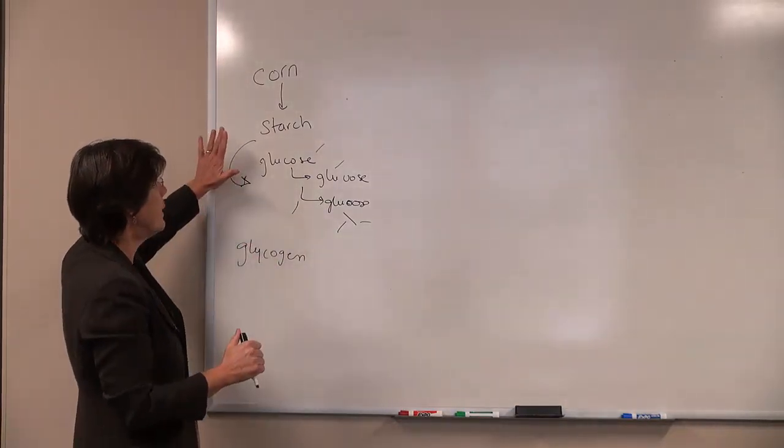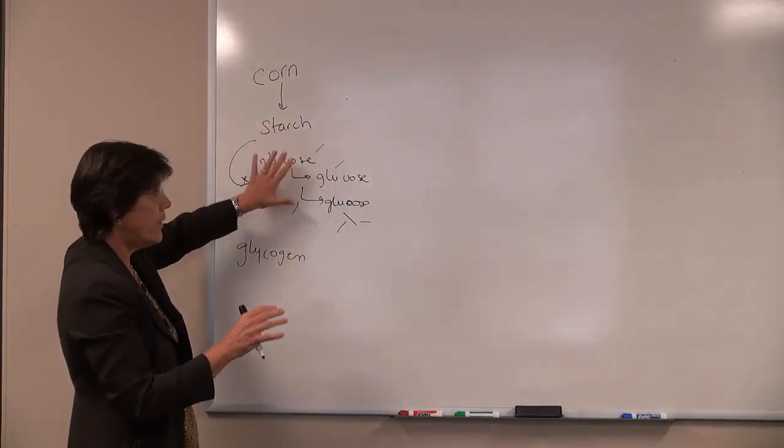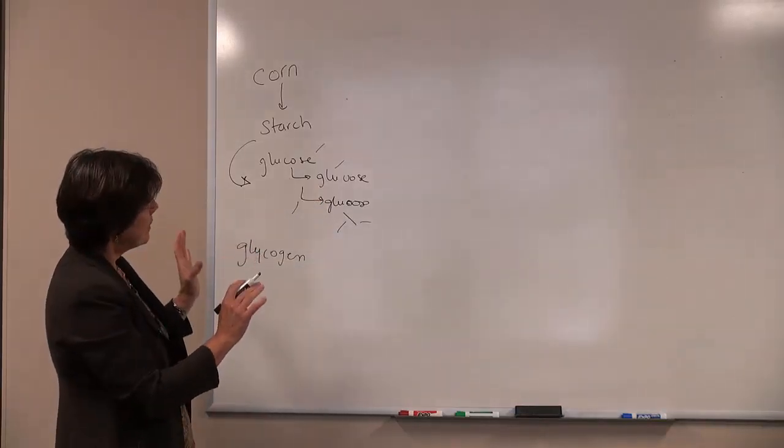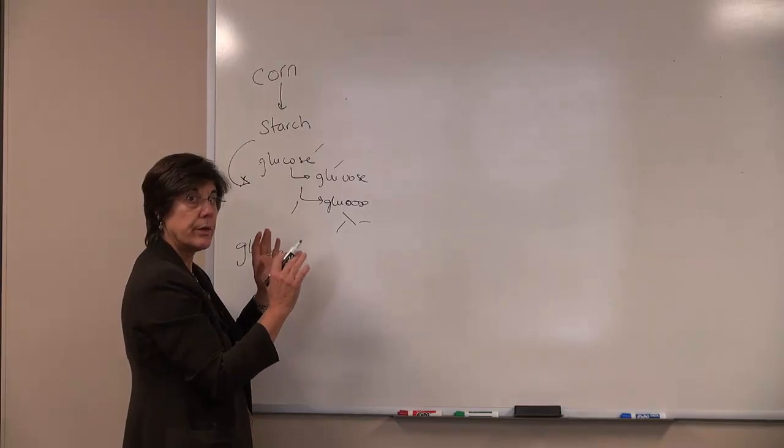So in order to make high fructose corn syrup, the starch molecule made up of all of the glucose undergoes an enzymatic reaction where some of the glucose is converted into fructose.